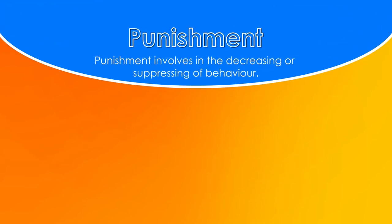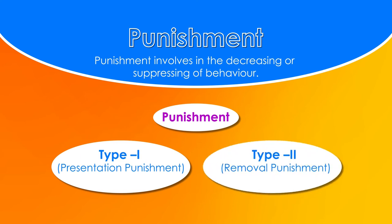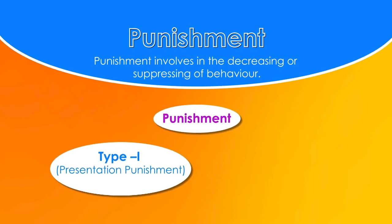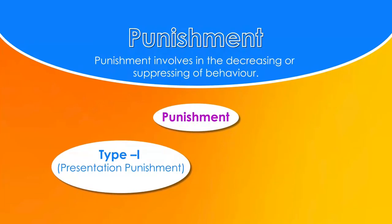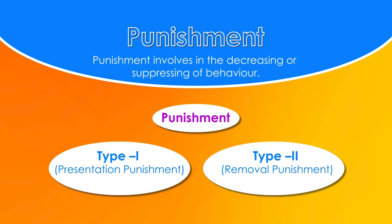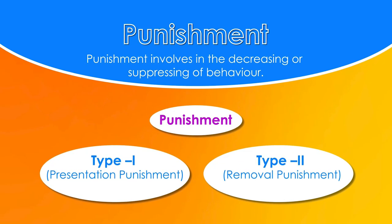It is very important to note that negative reinforcement is different from punishment, which involves decreasing behavior. Punishment is the process that decreases a behavior. Punishment is of two types: Type 1 (presentation punishment), where punishment is given on the occurrence of undesirable behavior; and Type 2 (removal punishment), where a pleasant stimulus is removed on the occurrence of a certain behavior.